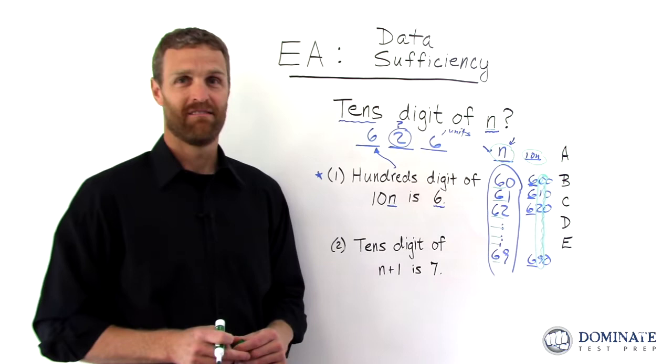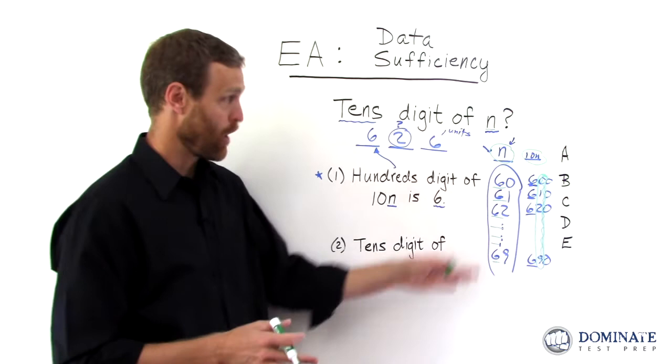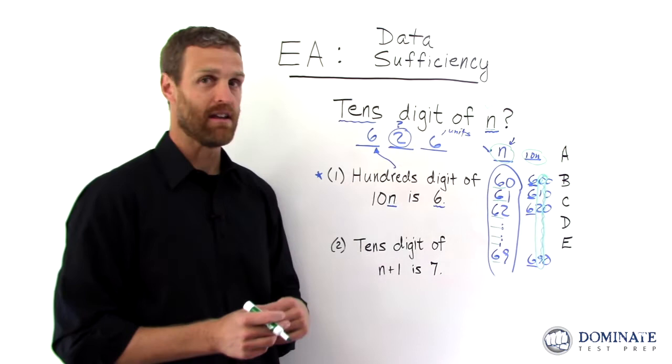It will be the same every time. 6, 6, 6, 6, like all the way down. Therefore, I definitively know what n is, or the tens digit of n is, according to statement number 1. So statement 1 is actually sufficient. Well done if you got that, right?